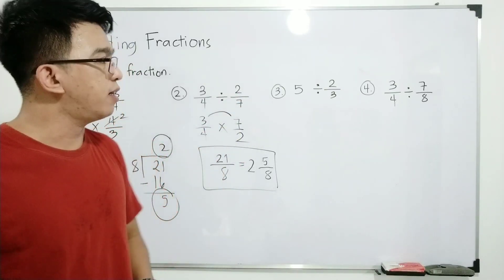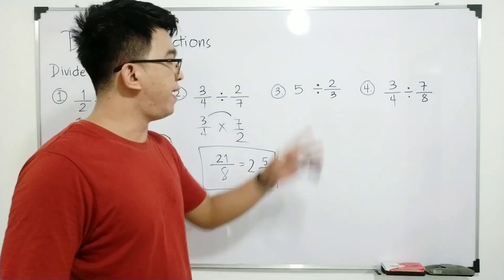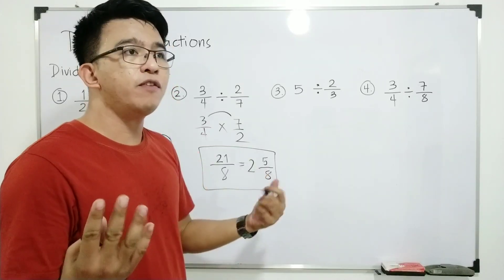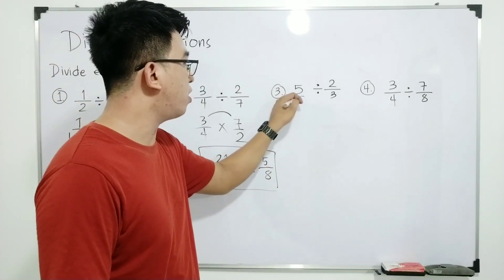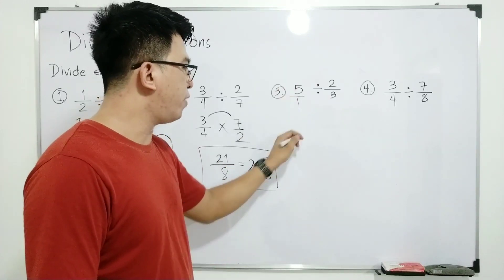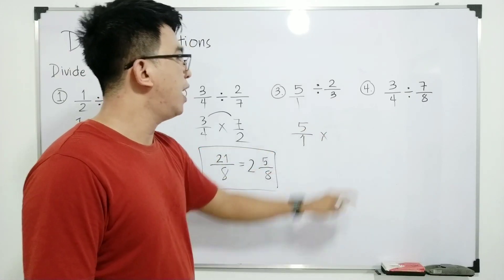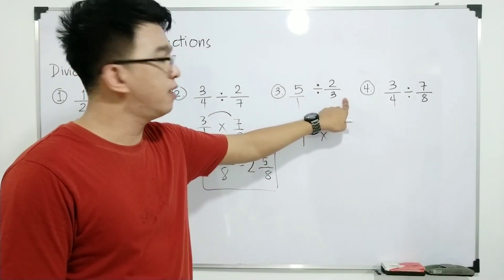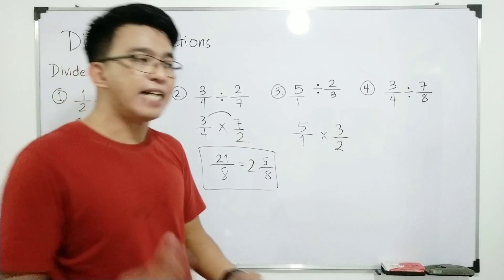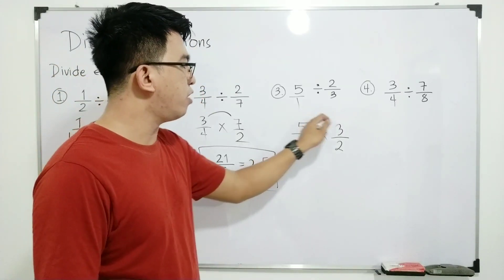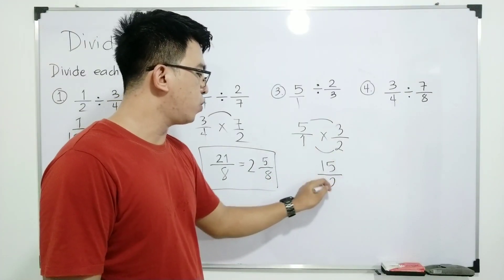Let's move on to item number three. Here we are given a whole number divided by a fraction: five divided by two over three. Don't be confused — five can be expressed as a fraction: five over one. So we copy five over one, change the operation to multiplication, and get the reciprocal of two over three, which is three over two.